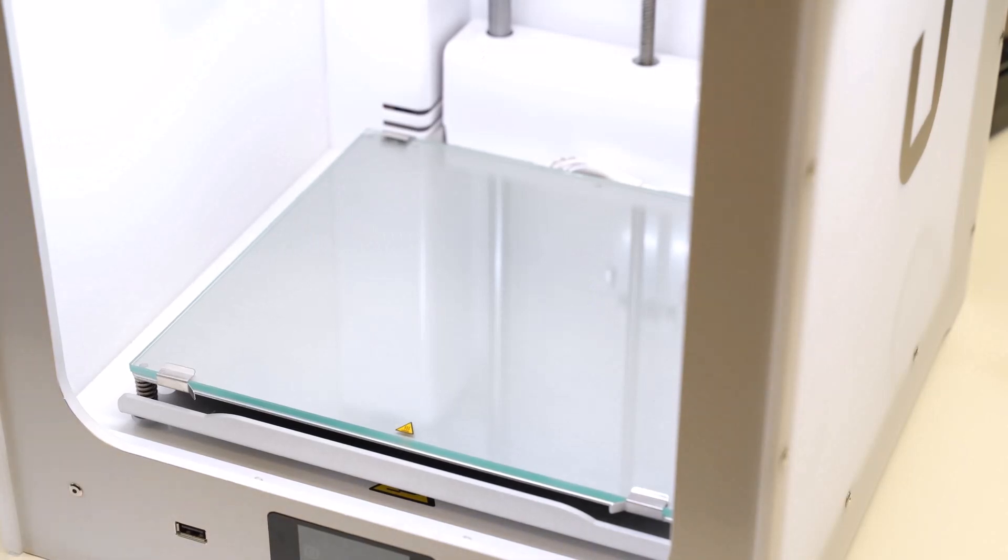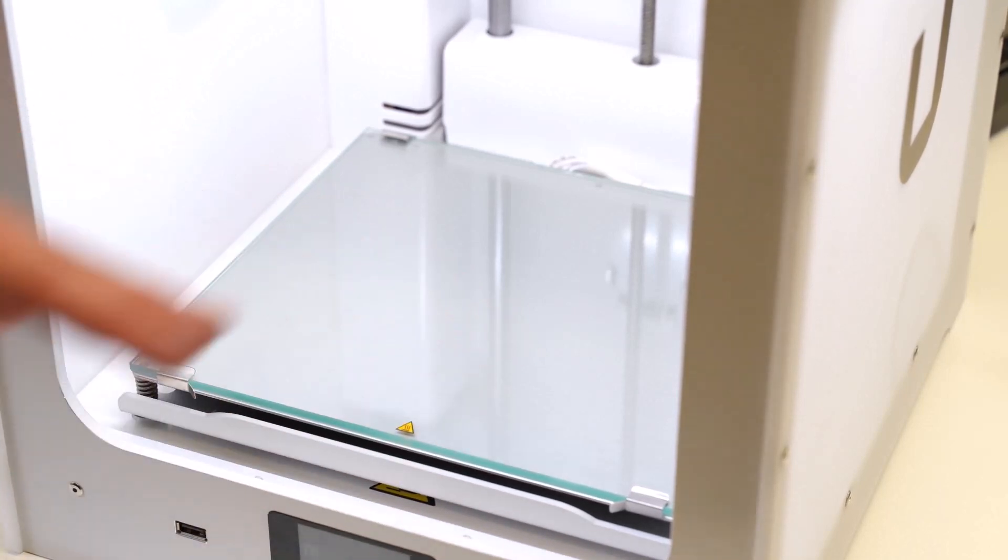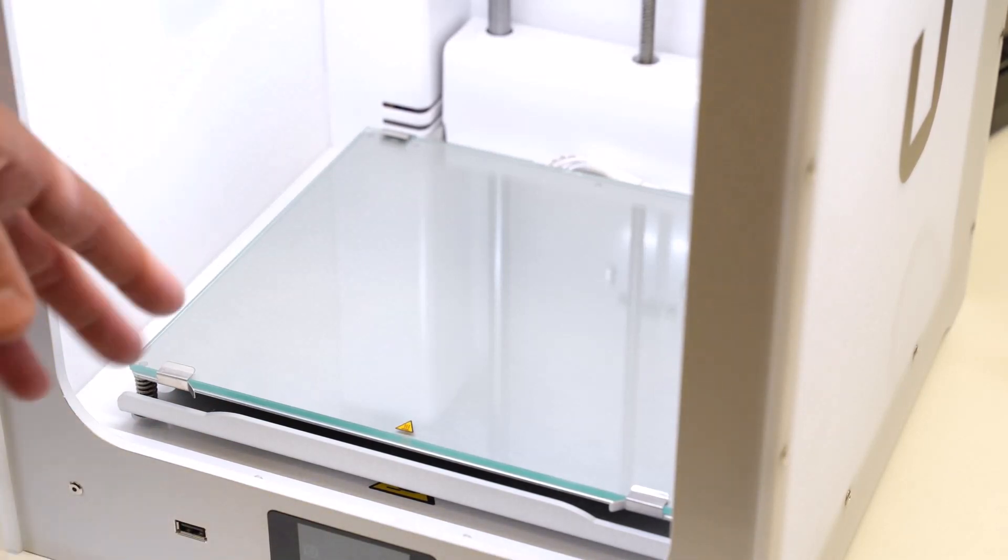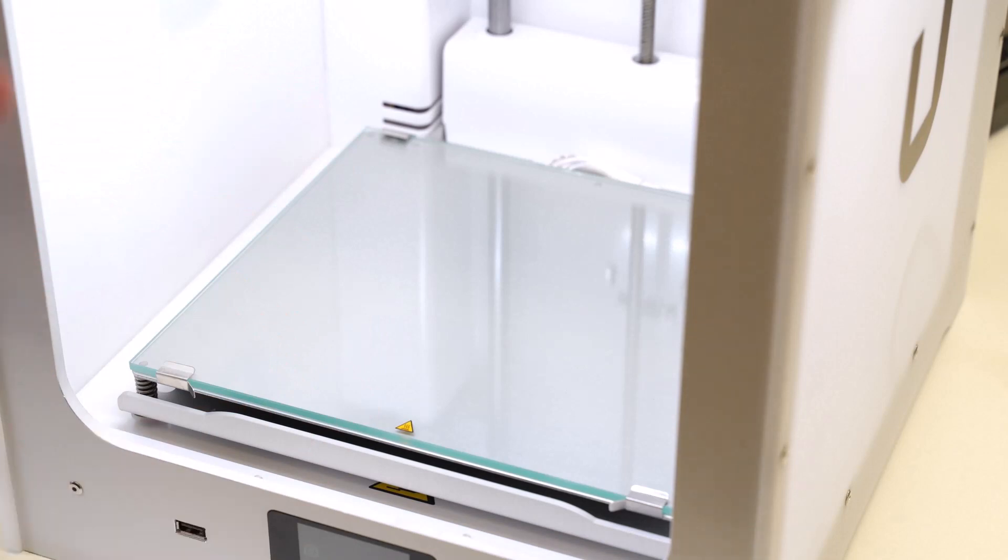The last thing that we need to focus on in terms of cleaning the machine is the build table at the bottom here. Because it's glass it's very susceptible to fingerprints, dust, oils, greases, anything like that, and also if we use glue or any other kind of adhesive while we're printing that can build up and cause us more problems.